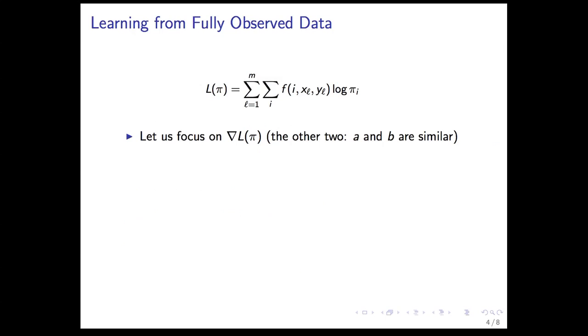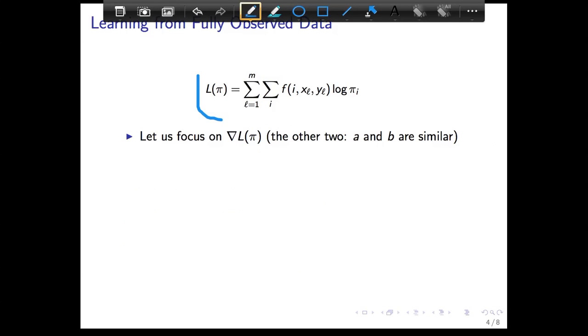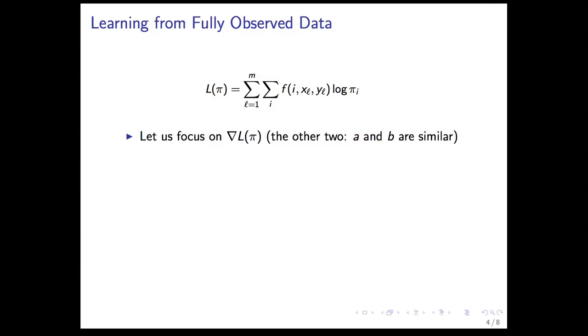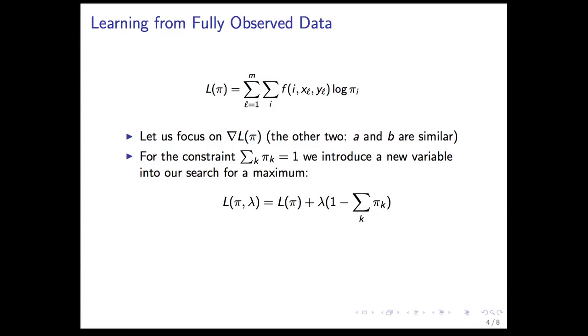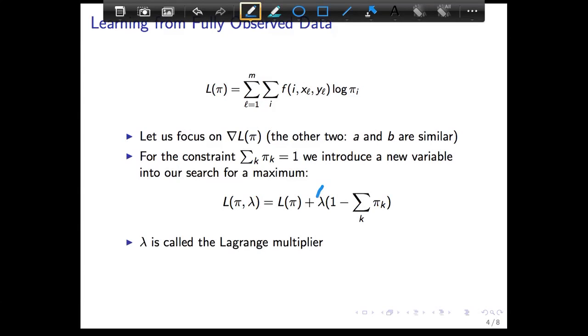Let's narrow our focus down to just L of pi. L of pi has two sums and a frequency times a log of pi_i, and we are trying to find the optimal value of pi_i. We want to make sure this is a probability, so we're going to add a constraint. We introduce a new variable, lambda, called a Lagrange multiplier, and it introduces an additional constraint into our search for a maximum.